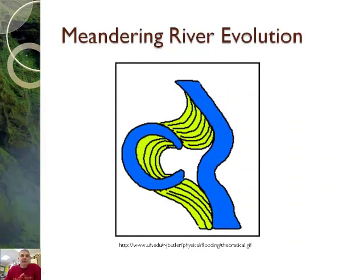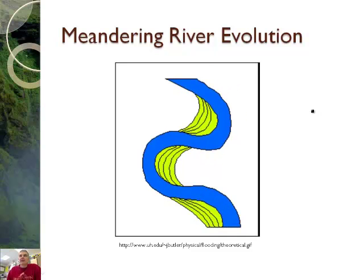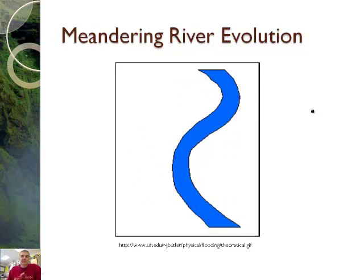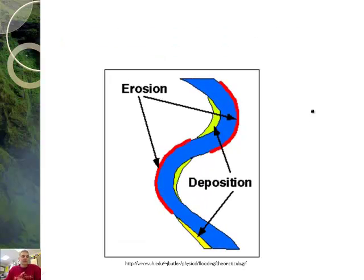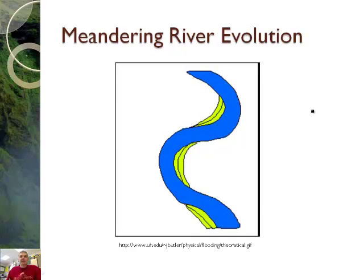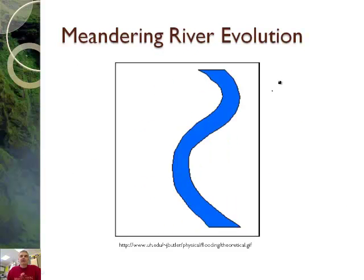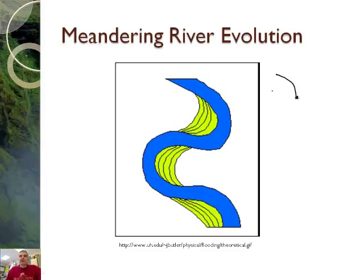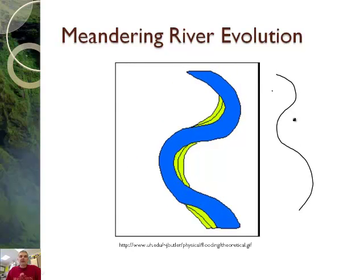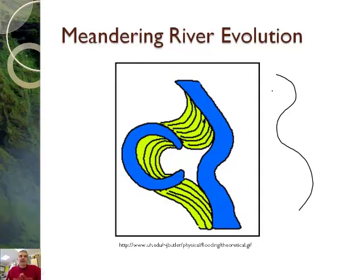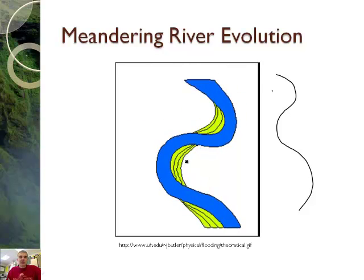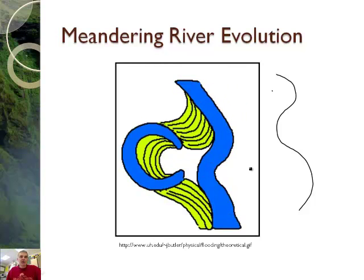Here's the evolution of a meandering stream. Watch: the first step is just a curved stream. It starts out in this very typical S pattern. The green stuff is deposition, and it bends more and more and more. Eventually it will cut this thing off and make what's called an oxbow lake. It's pretty fascinating how that works.